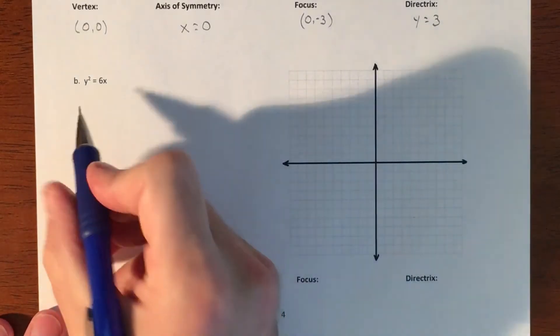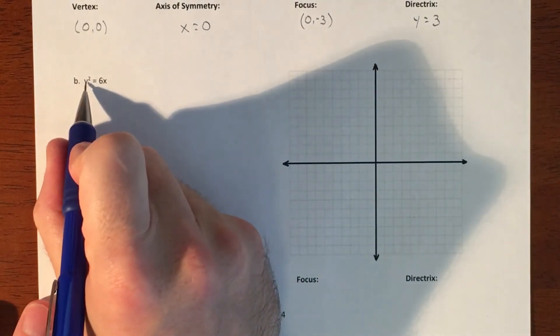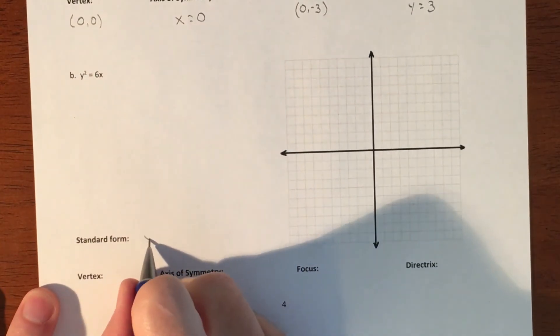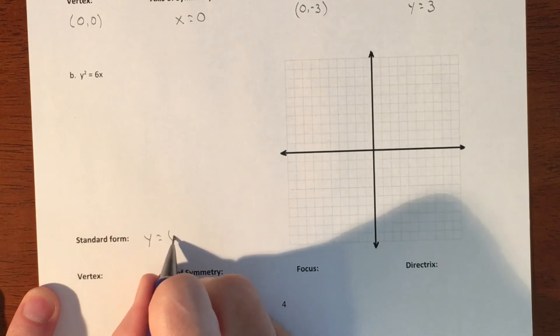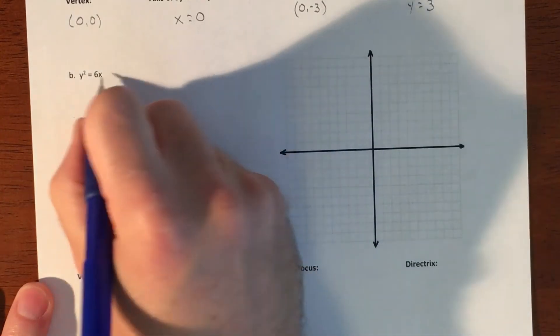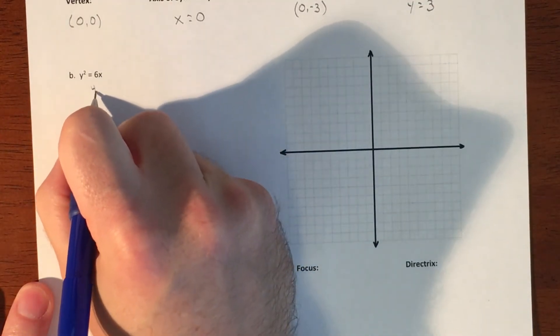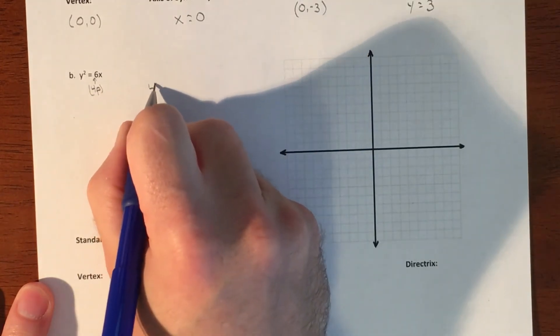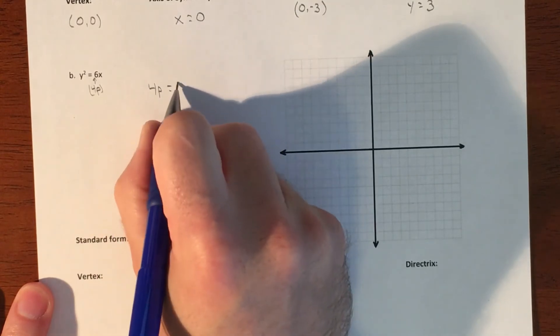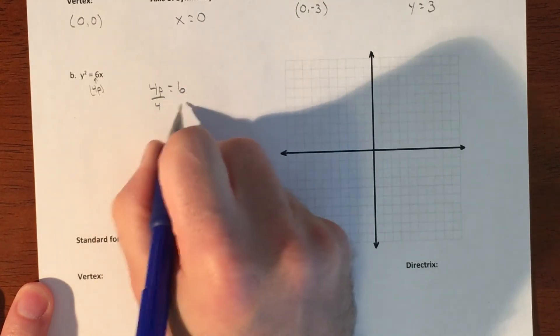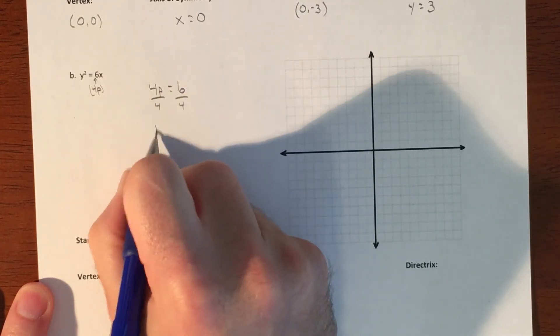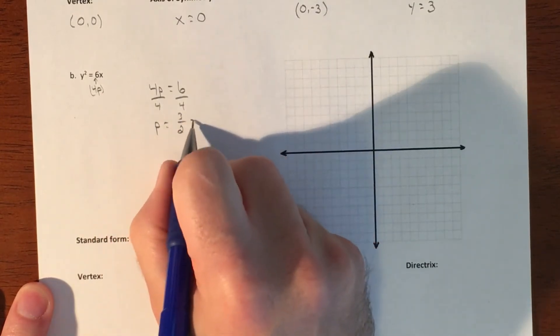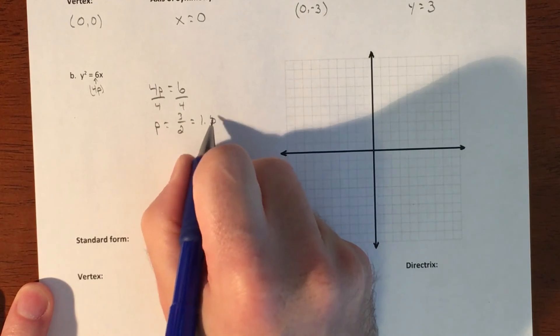So this one, this one is a left and right kind of a graph. It's already set up in standard form. Perfect. So that is 6x. So remember that that is your 4p term right here. So I take 4p, set it equal to 6, divide by 4, p equals 3 halves, which is graphing wise 1.5.